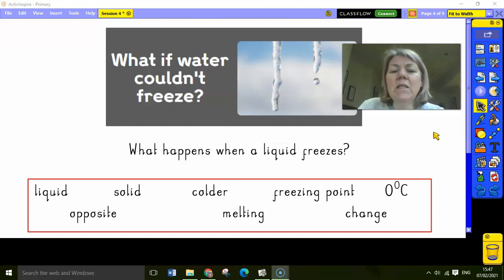So what happens when a liquid does actually freeze? What is happening? I do want you to record something here. I want you to answer this question. Just a couple of sentences, a short paragraph to explain what happens when a liquid freezes. Now, you might want some of these words here in this red box to help you with that. We've got liquid, solid, opposite, colder, melting, freezing point, change, and zero degrees centigrade. So what does actually happen when a liquid freezes? Have a little go. Write yourself a little sentence or two. And then come back and join me and we will get moving on.